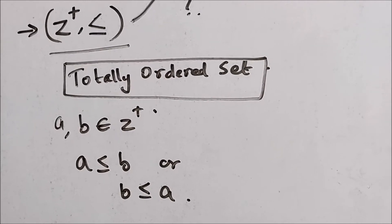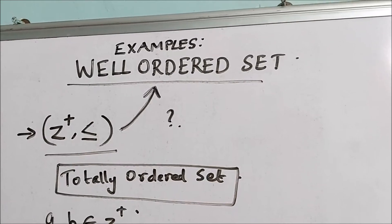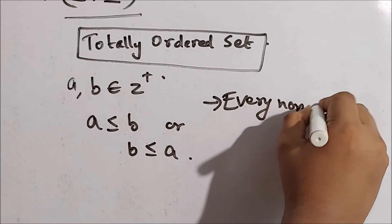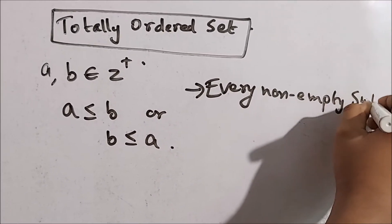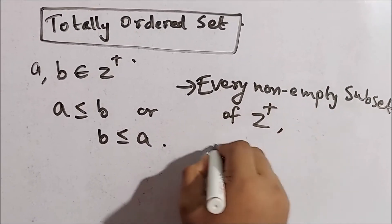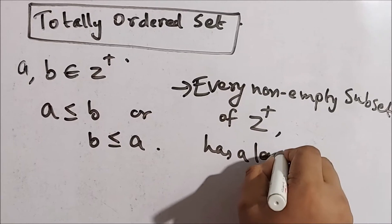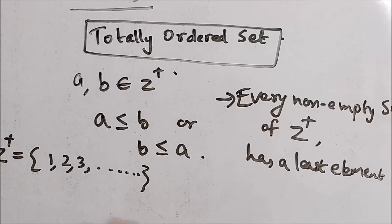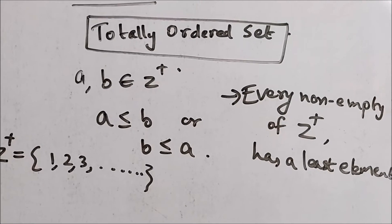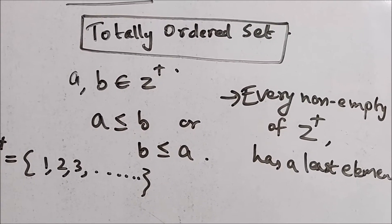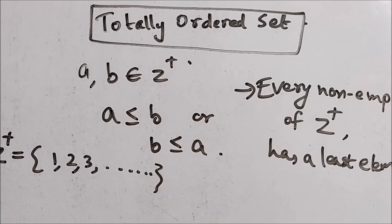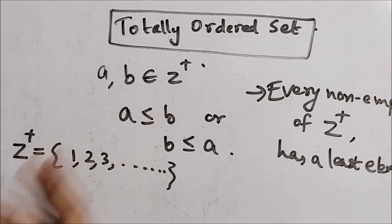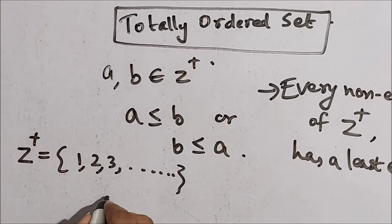That is the reason why (ℤ⁺, ≤) is a totally ordered set. Now we also have to check the second condition for this set to be a well-ordered set — we have to check whether every non-empty subset of ℤ⁺ has a least element or not. The set of positive integers is an infinite set, and we are claiming that any non-empty subset of ℤ⁺, meaning a subset with at least one element, has a least element.